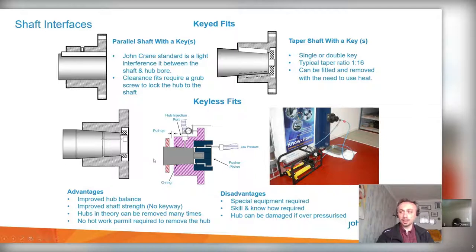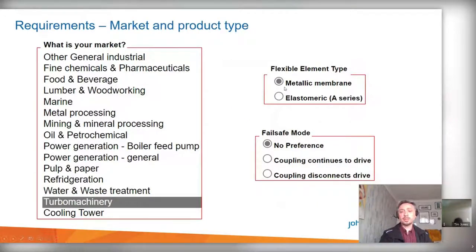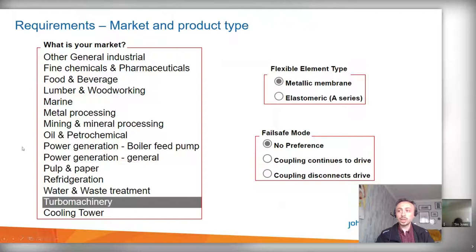Experienced people are required to assemble these things, which is why prices can rise. Various markets are served including marine, food and beverage, power generation, refrigeration, waste and water treatment, turbomachinery, and cooling tower applications — anything rotating needs some kind of coupling. Turbomachinery is particularly challenging due to high speeds and complex requirements.